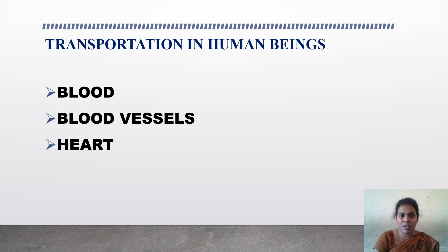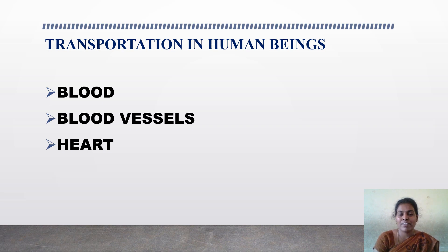In human beings, the circulatory system involves three important parts: first, blood; second, blood vessels; and third, heart. Because of all these important parts, the circulatory system in human beings is also called the cardiovascular system. We will now learn about each important part of the circulatory system briefly.